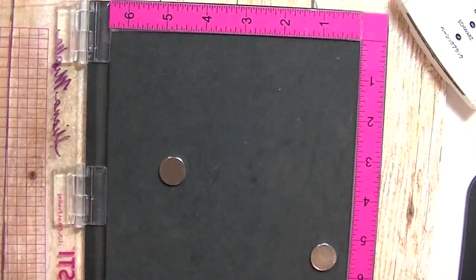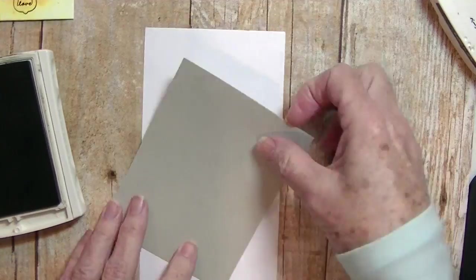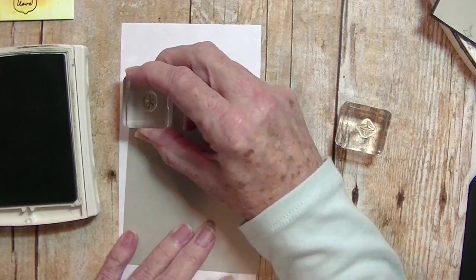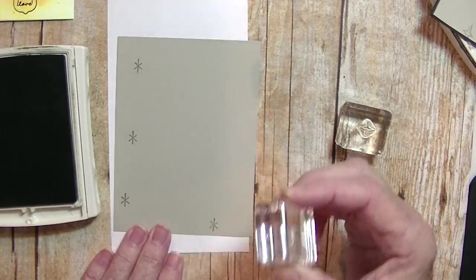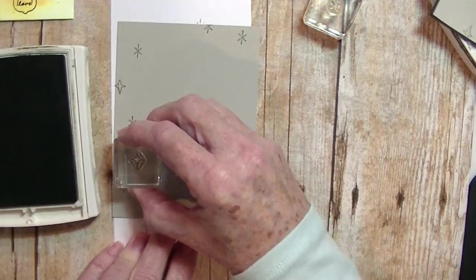I use the Sahara sand for the background stamping and also use the basic black for the sentiment that is not going to be shown getting stamped on this video. That got chopped.